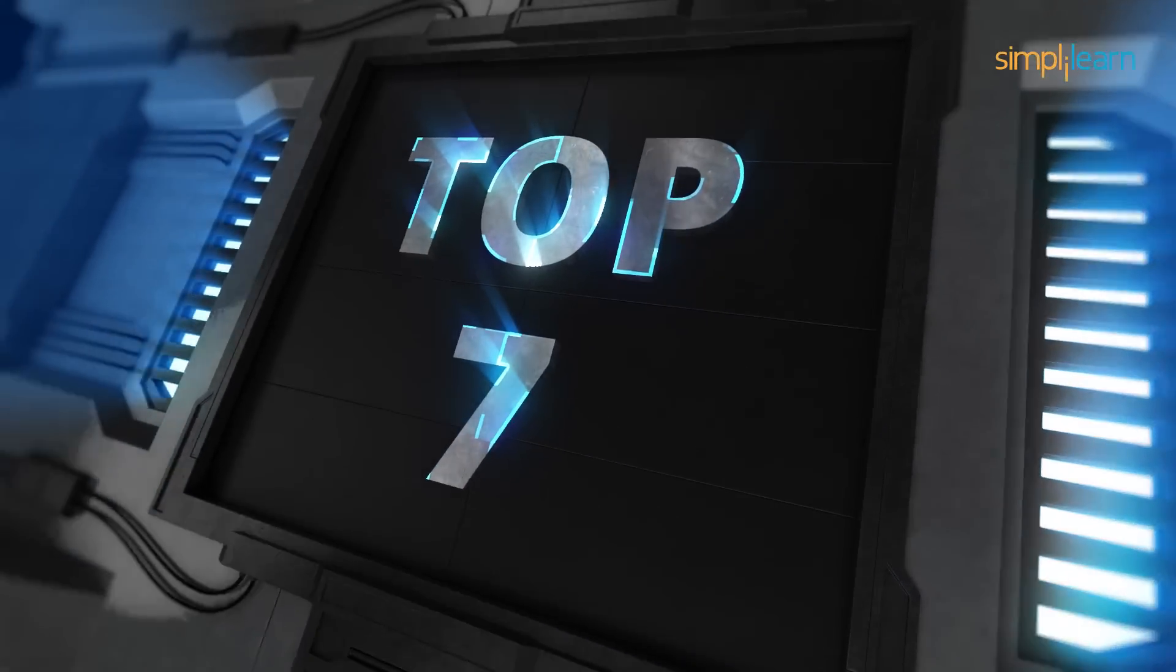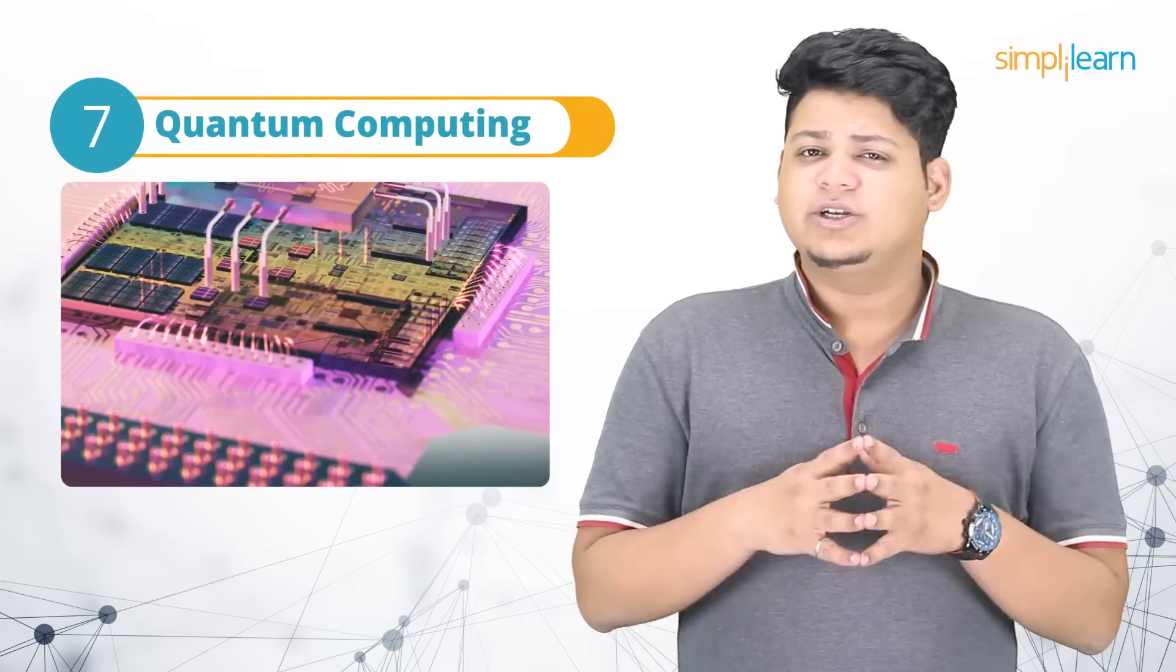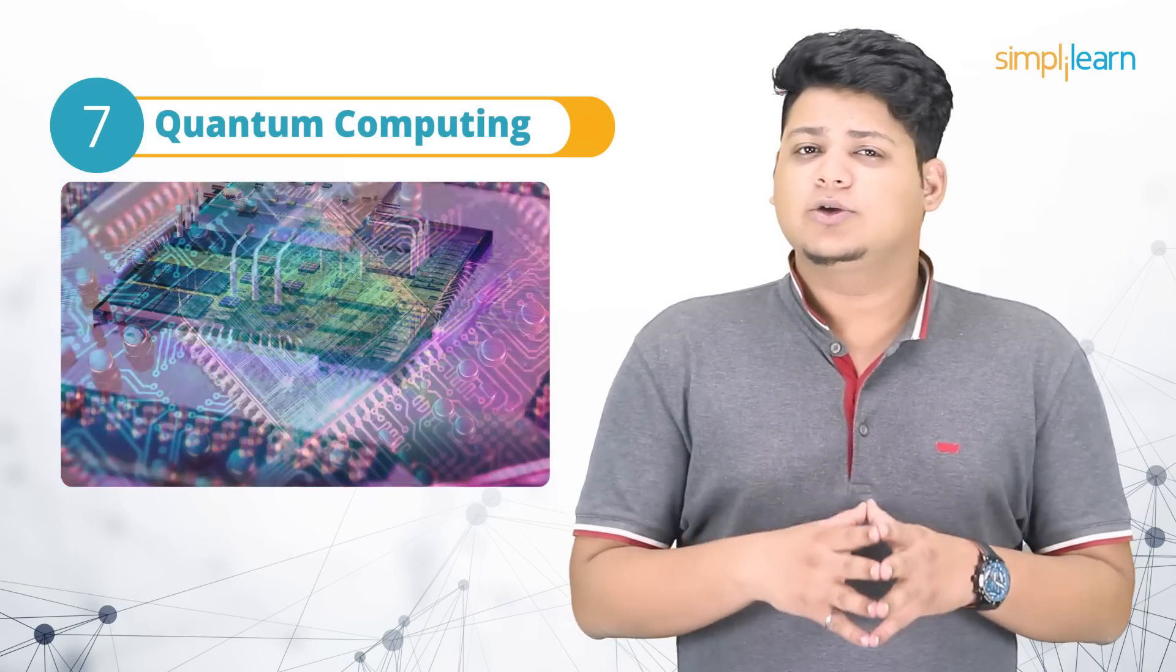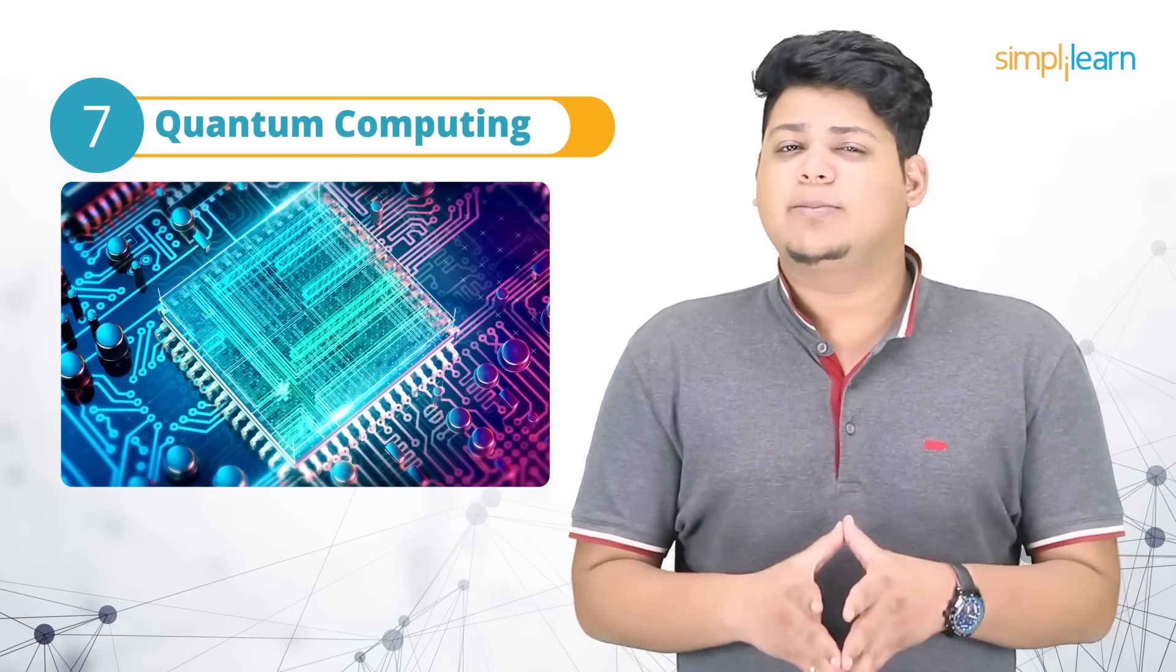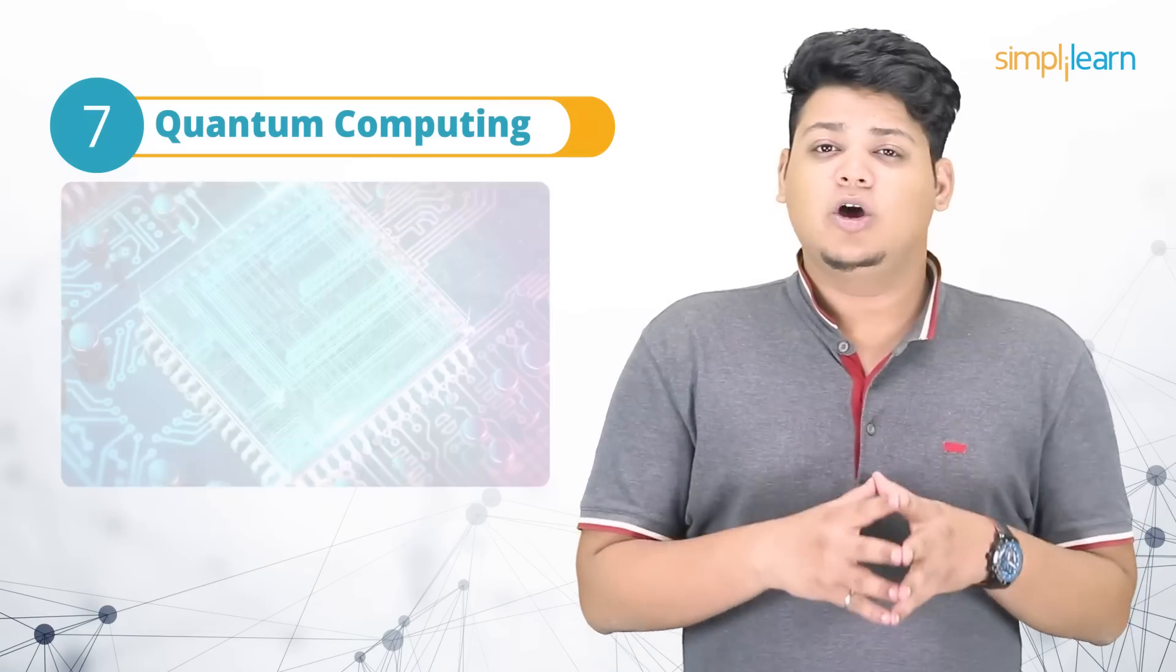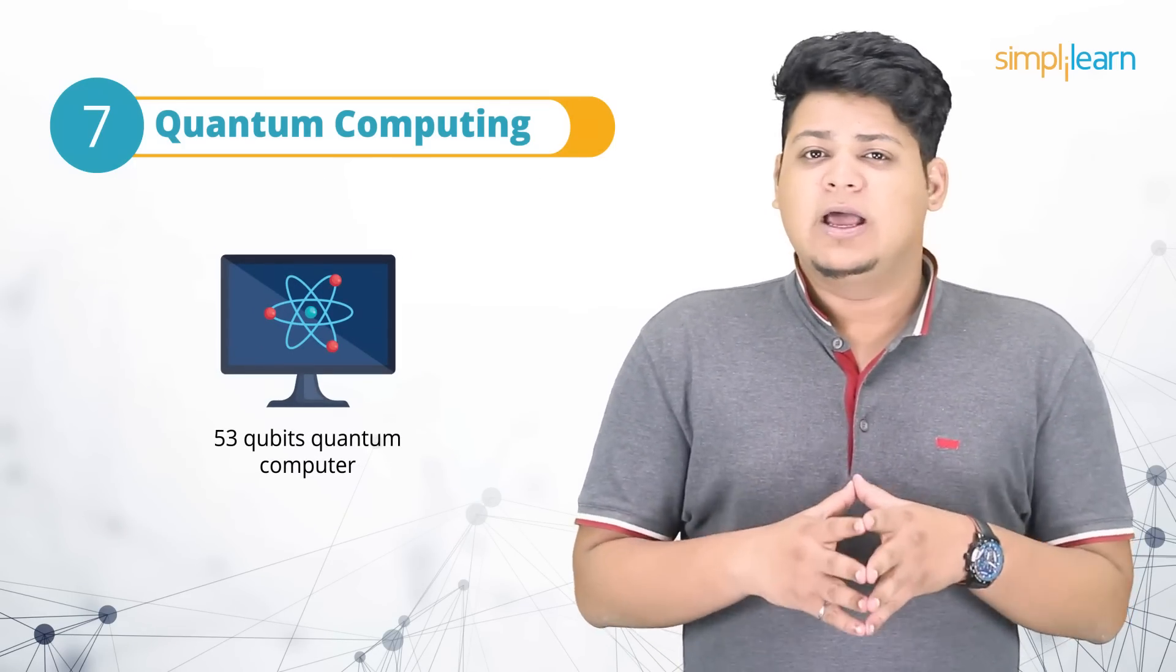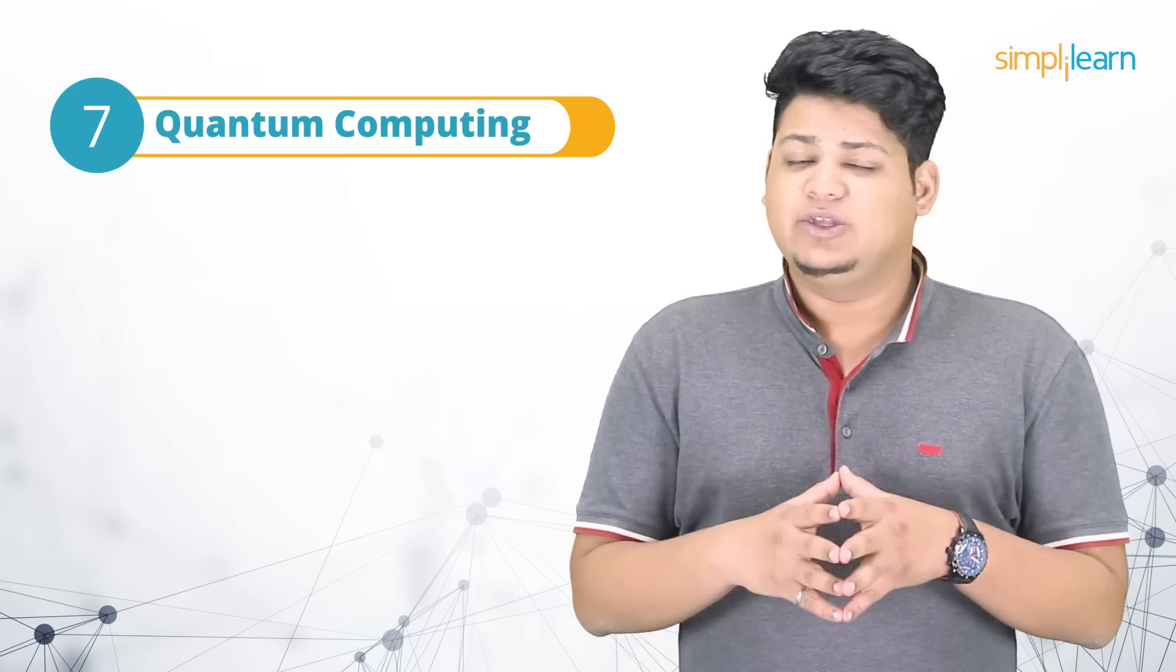In the seventh position, we have Quantum Computing. It is the area of study on developing computer technology based on the principles of quantum theory. It explains the nature and behavior of energy and matter on the quantum level. In 2016, scientists built a 5 qubit fully programmable computer. Now, it's been upgraded to 53 qubits. IBM will soon launch this 53 qubit quantum computer. Quantum computer operates on the atomic level and allows them to process data at speeds unimaginable to classical computers that we are using nowadays.